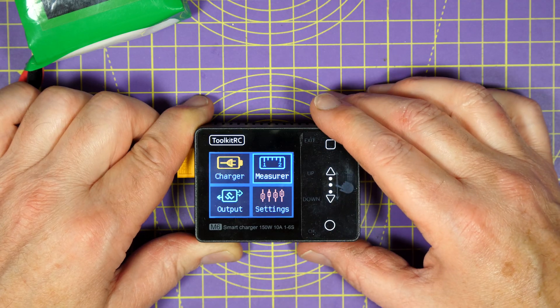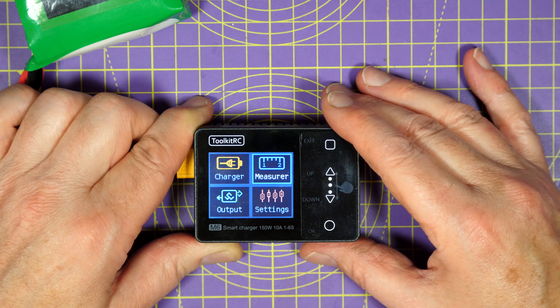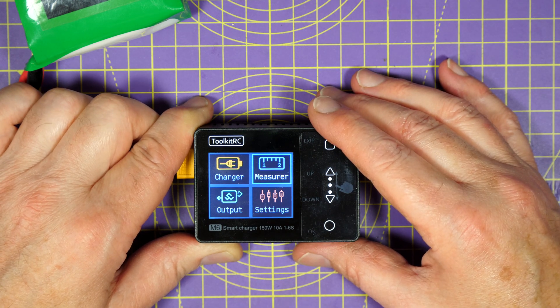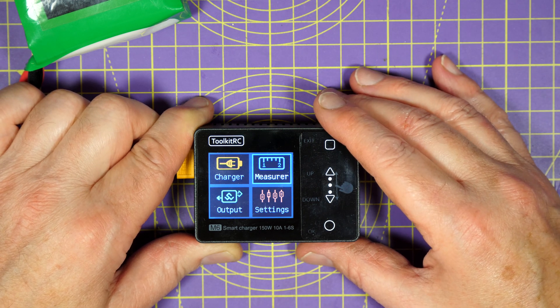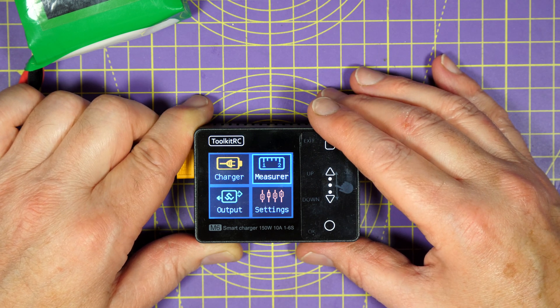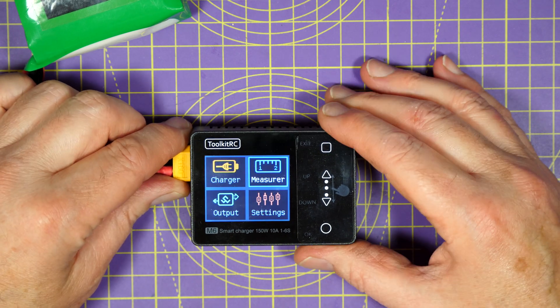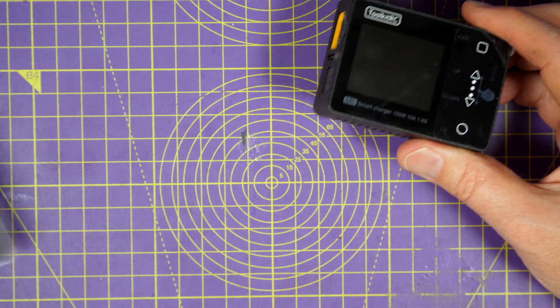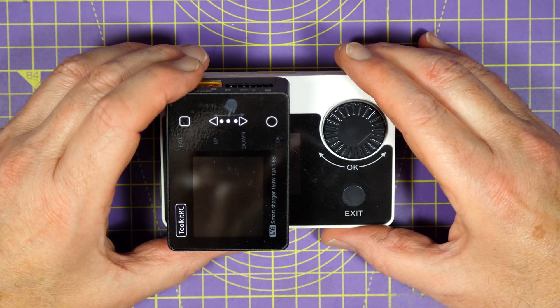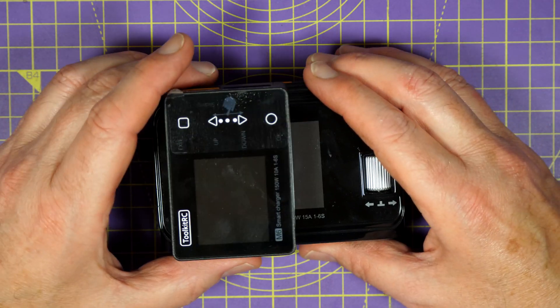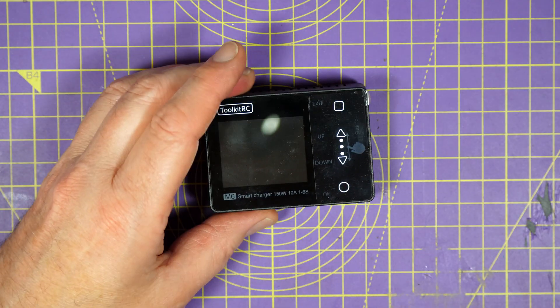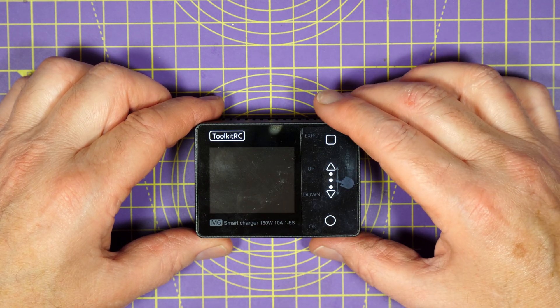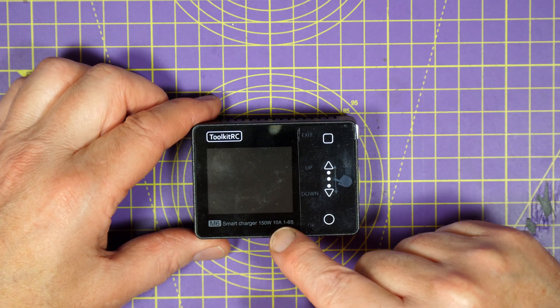And you have to hand it to Toolkit RC. They keep on top of all the inevitable issues, and they listen to their customers and improve their products pretty often. And I just like the way they work. This is a great little 150-watt charger, and it only costs about £21 or $26. And you can see the size. It's about half the size of the M8 and the M6D. It's tiny. And if you check out the links in the description, they'll show you the latest prices. But make sure that you get the V2 version.